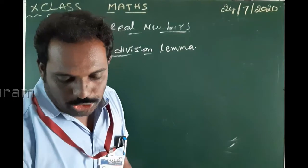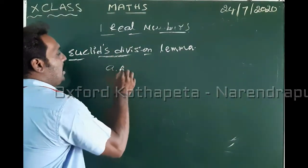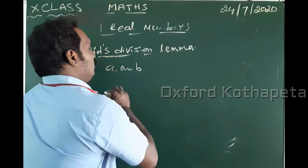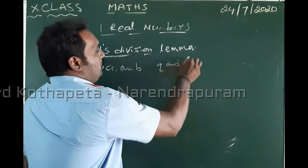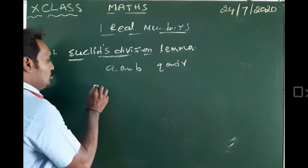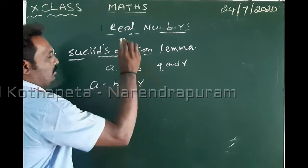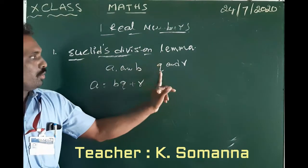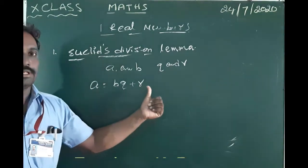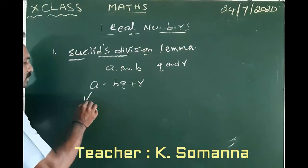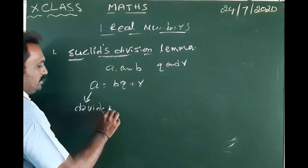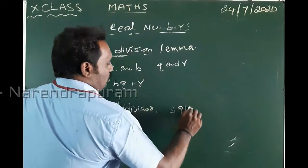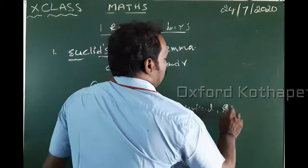Given positive integers A and B, there exists a unique pair of integers Q and R such that A = BQ + R. This is the division lemma. Here, A is the dividend, B is the divisor, Q is the quotient, and R is the remainder.